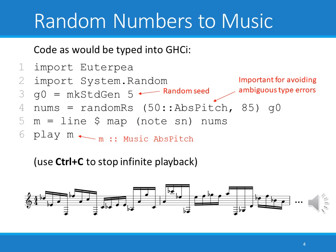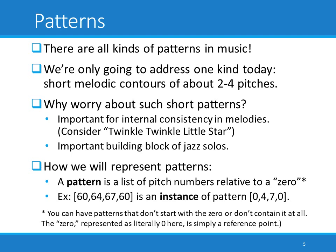Fortunately, we can improve upon that with patterns. There are all kinds of patterns in music, however we're only going to address one type today: short melodic contours of about two to four pitches. They're actually very important for what I call internal consistency in melodies. If you think about Twinkle Twinkle Little Star, there is a repeating two-note motif that by itself is pretty meaningless, but it's important for the overall structure of the melody. These types of tiny motifs are also important building blocks of jazz solos. We're going to represent patterns as a list of pitch numbers — AbsPitch values — relative to a zero, and in our case that zero will literally be the number zero.